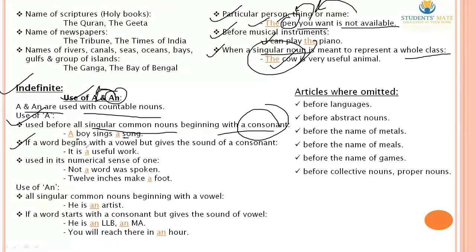Second point: if a word begins with a vowel letter but gives the sound of a consonant, then 'a' is used. The use of 'a' and 'an' totally depends on the sound they produce — if the vowel sound is there, use 'an'; if the consonant sound is there, use 'a'.